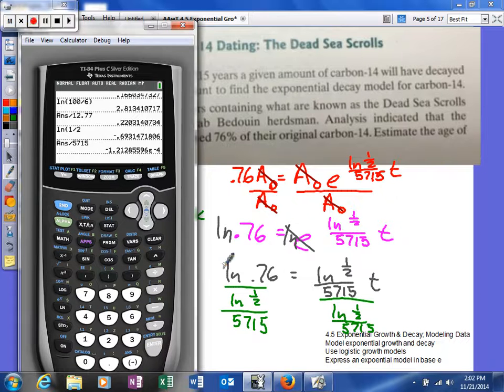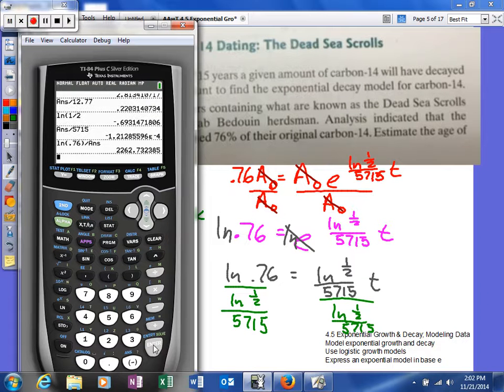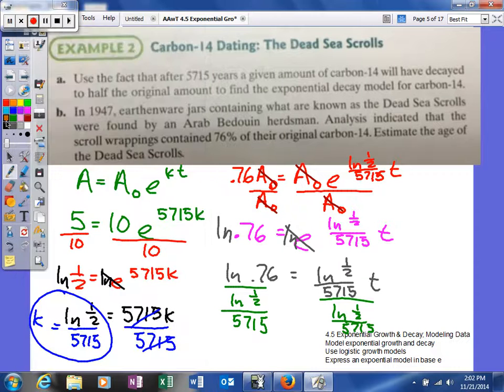So now I'm going to go ahead and take the natural log of 0.76. And I will divide that by the previous answer to get how many years apparently the Dead Sea Scrolls have been around. So I'm going to round it to the nearest year this time. So 2,263.